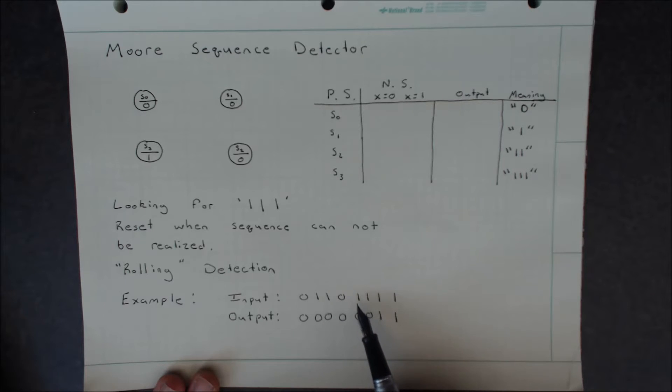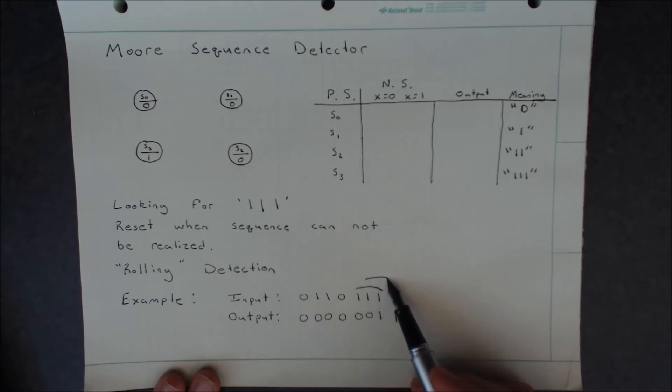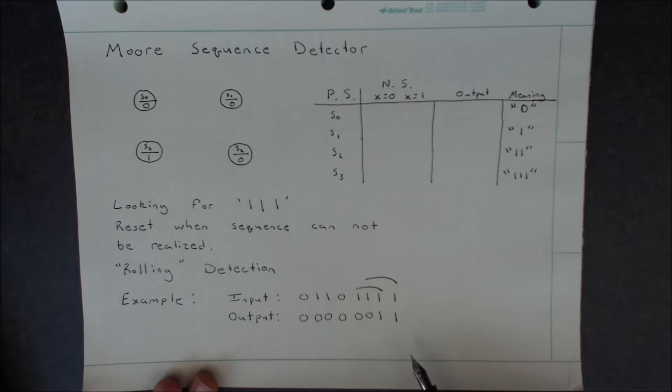Now if we skip forward a bit till we start receiving 1s again, once we receive three 1s in a row, our output turns to 1 because these three make up the pattern 111. When we receive the next 1, you see that we also receive a 1. This is because these three digits make up the pattern yet again of 111. So this is what we mean by rolling detection.